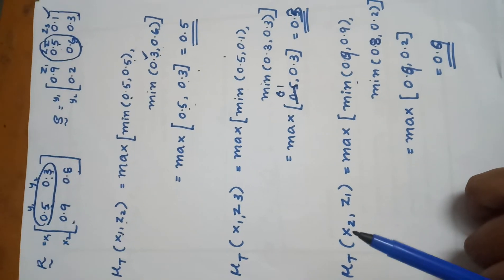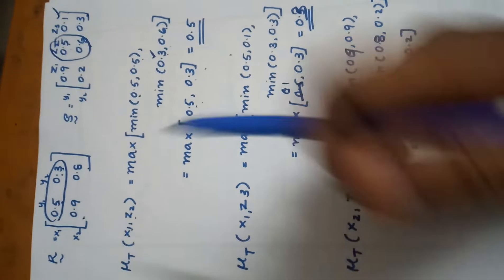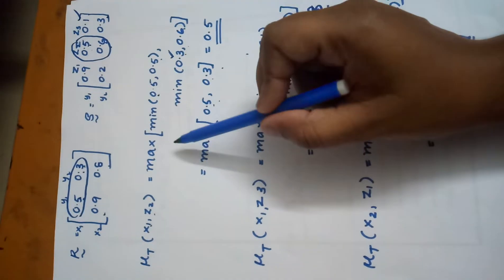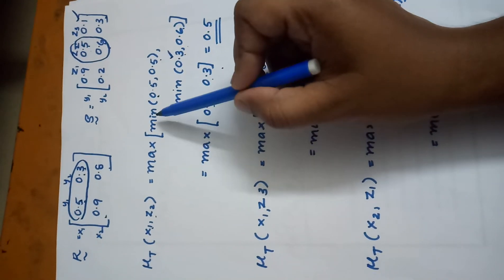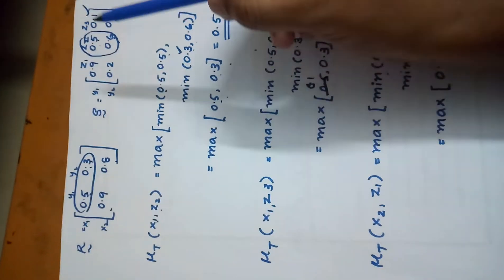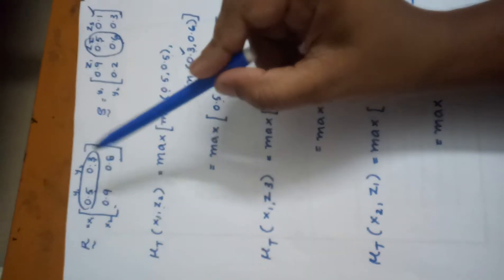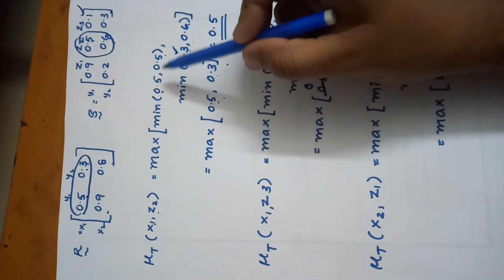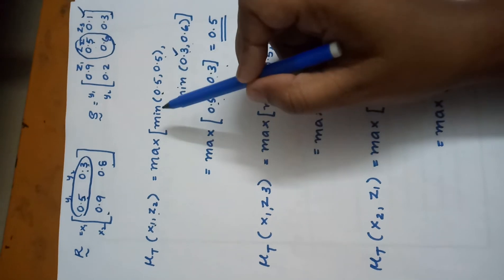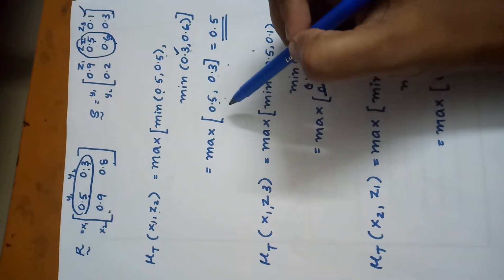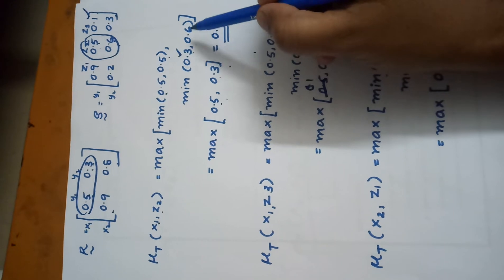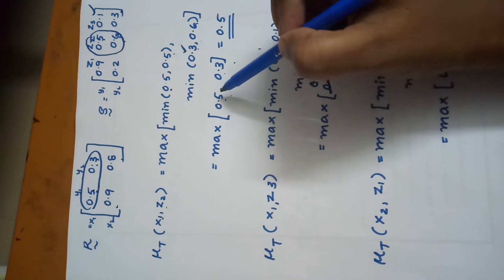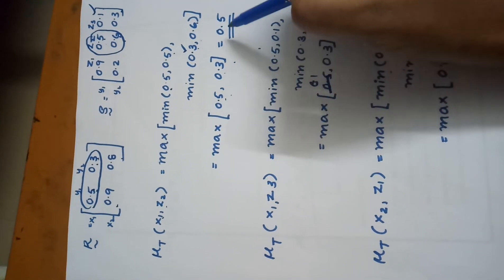Next, we calculate μT(x1, z2), where x1 is the first row and z2 is the second column. We calculate max of [min(0.5, 0.5), min(0.3, 0.6)]. Minimum of 0.5 and 0.5 — the two values are equal — so minimum is 0.5. Minimum of 0.3 and 0.6 is 0.3. Then max of 0.5 and 0.3 equals 0.5.